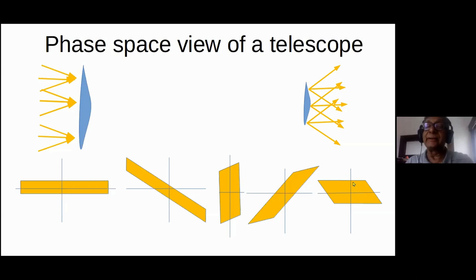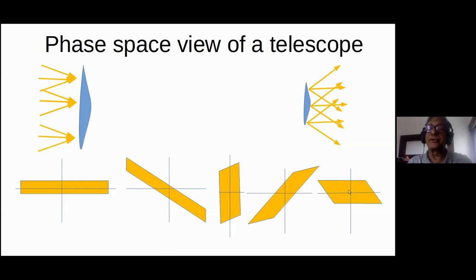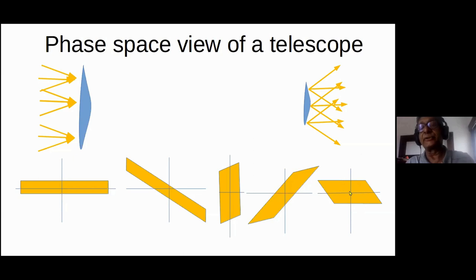The fact that area is conserved is something not often emphasized in elementary courses, but it's actually rather important. If you are collecting solar energy, this area conservation means there's a limit: the sun is half a degree, so at most you could stretch it out to plus or minus 90 degrees. That tells you that you can concentrate sunlight only up to a limit — and that limit has a significance: you cannot achieve a temperature significantly higher than the temperature of the sun.